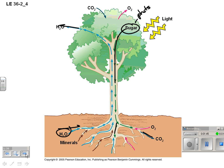Carbon dioxide and oxygen come in through the roots. Remember, plants still have to do cell respiration. Even though plants make their own food, they have to take that food and break it down in the process of cell respiration. So plants also have to take in minerals.